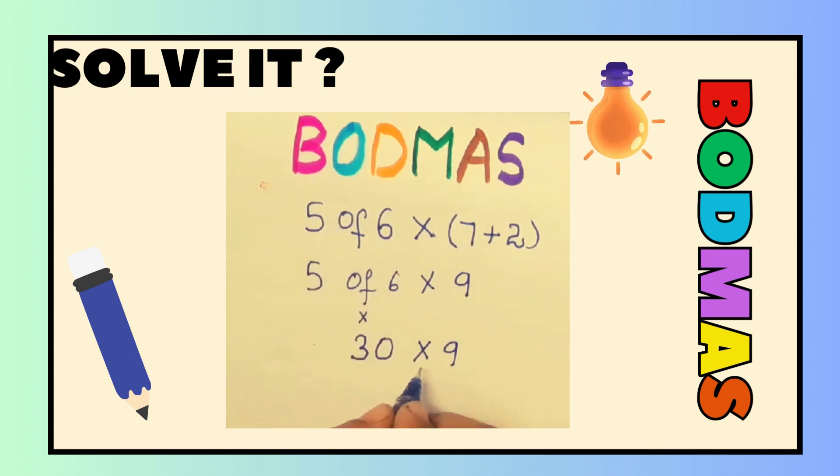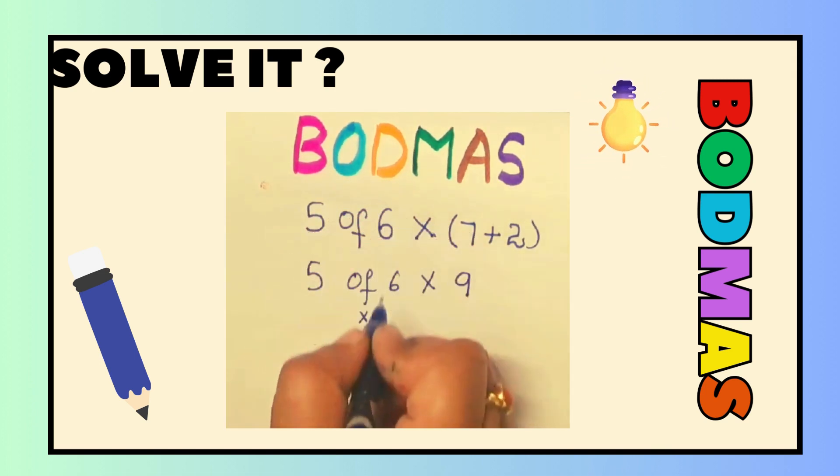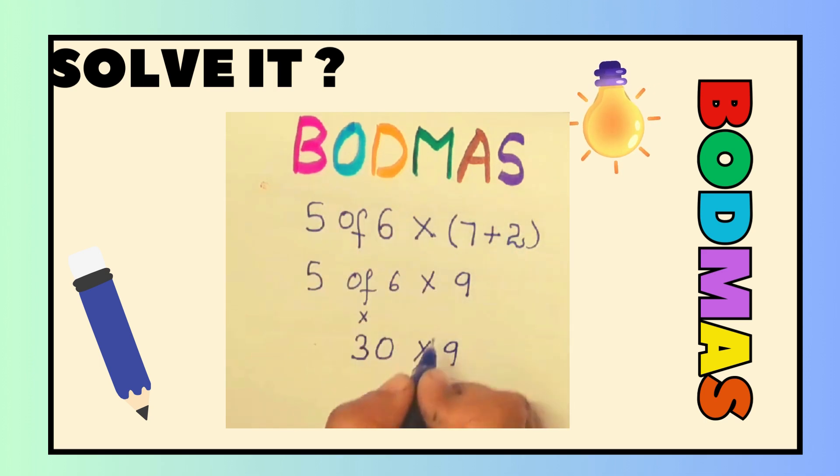After of, I have division D. But I don't have division in this. And then I have multiplication M. 30 into 9 which will be 270.